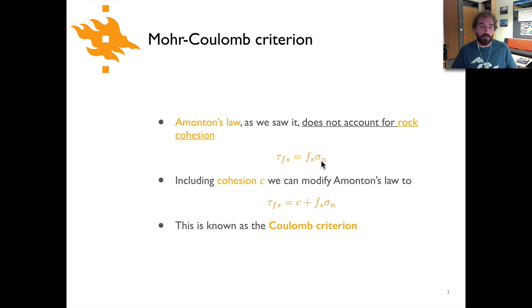Of course the rock has its intrinsic cohesion, its ability to hold itself together, and you have to overcome that cohesion before you can begin to have frictional slip within the rock. And so if we modify our relationship and simply add in this term c, that's the cohesion of the rock, then we can call this the Coulomb criterion, in which case now we have a relationship between the shear stress, the frictional coefficient times the normal stress, and then the intrinsic cohesion in the rock that must be overcome as well.